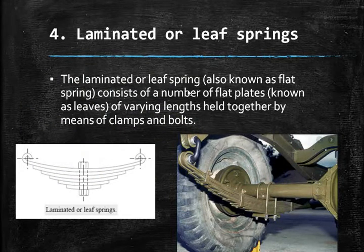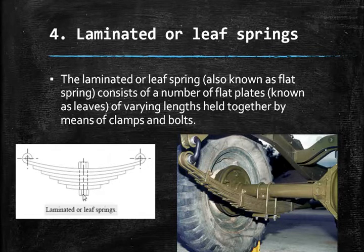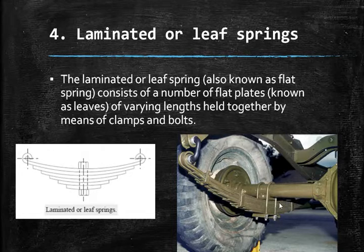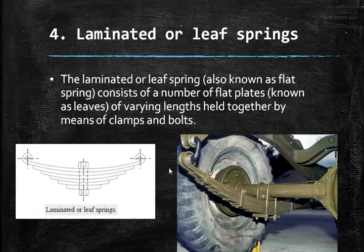Laminated or leaf springs are also known as flat springs. They consist of a number of flat plates called leaves of varying lengths, held together by means of U-clamps and bolts. The top or largest leaf is wound into an eye form at the ends. These springs are used in automobiles for load-carrying and damping applications, connecting the differential to the body.